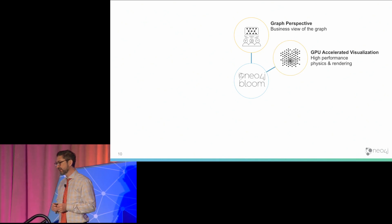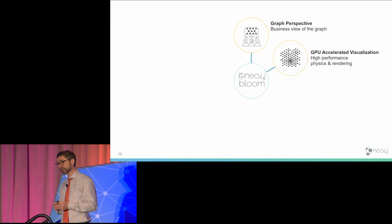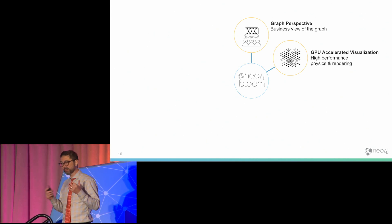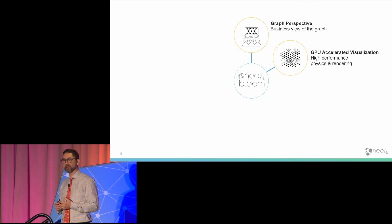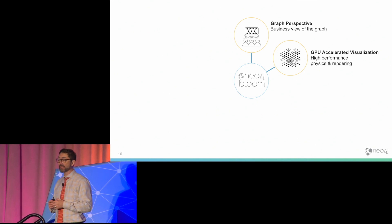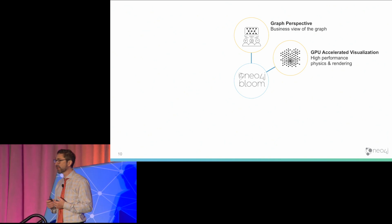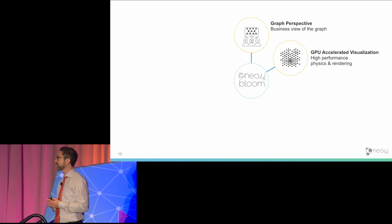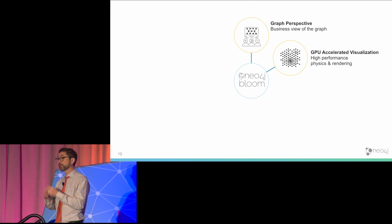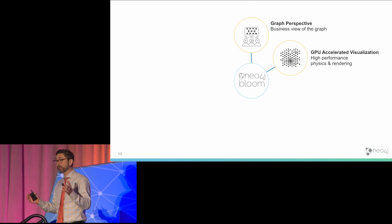Our focus for Neo4j Bloom is to have a data model that recaptures the business view of the graph that is implicit in the actual graph you have — in the labels, relationship types, and property keys — and that actually recaptures and focuses on the business entities themselves. We're also technologists who love writing code. What would a graph visualization tool be without being GPU powered? The math involved in doing physics layouts and rendering really requires GPU power to do properly, so we built our own GPU-accelerated visualization engine for both rendering and physics calculations.